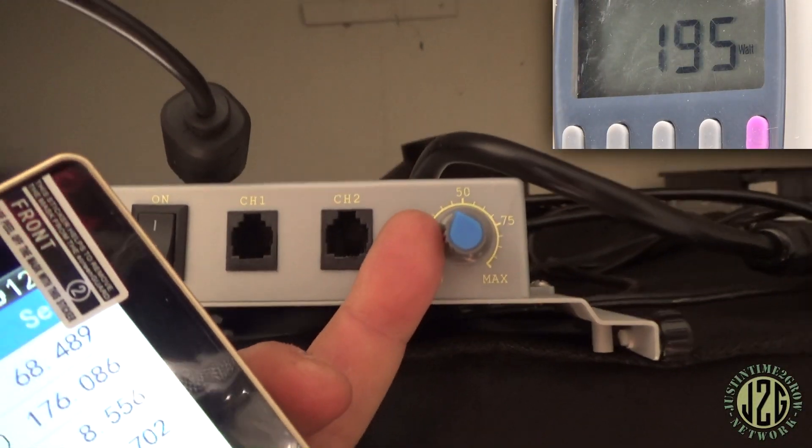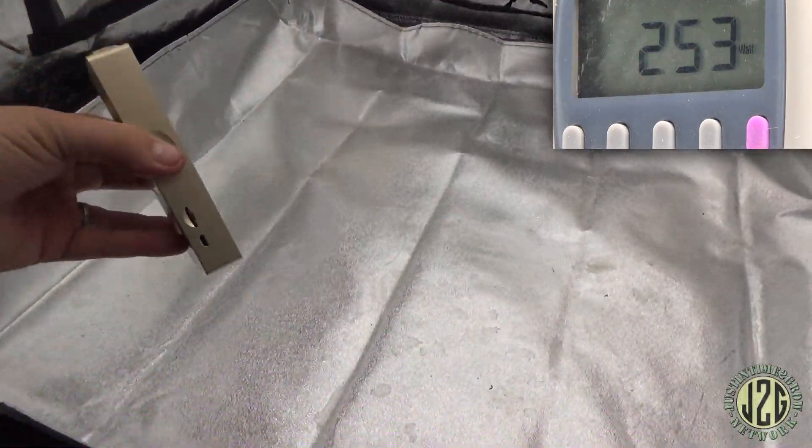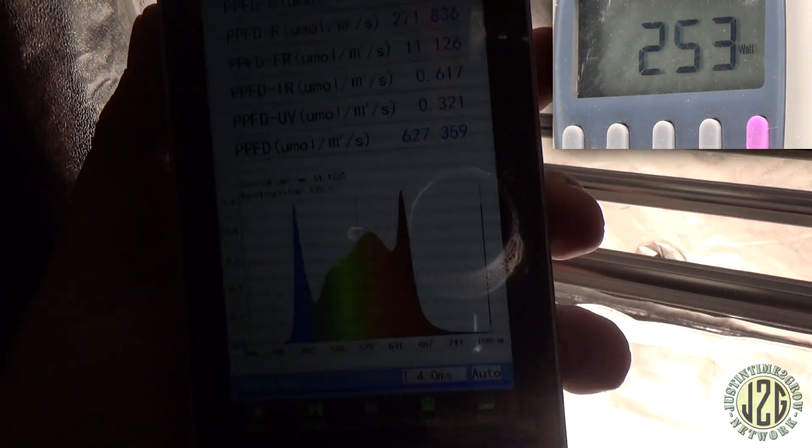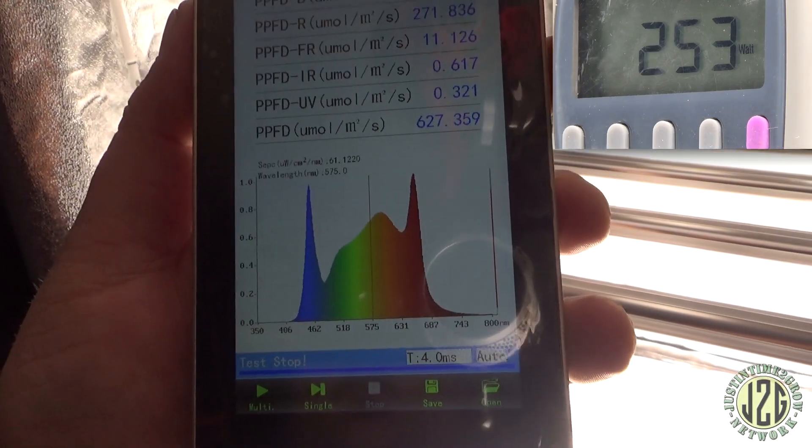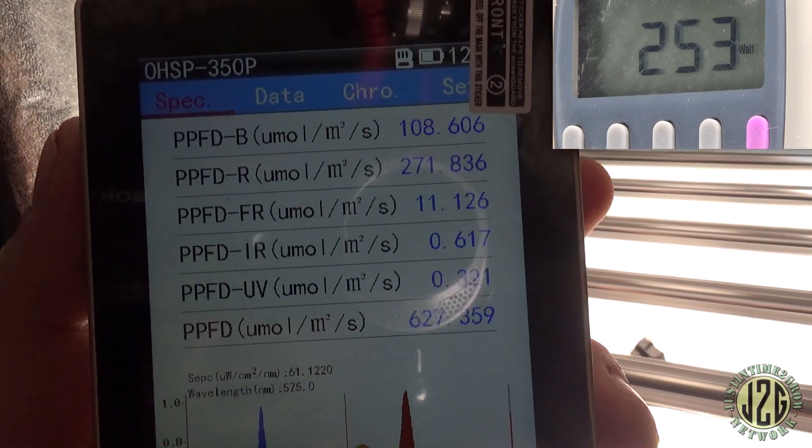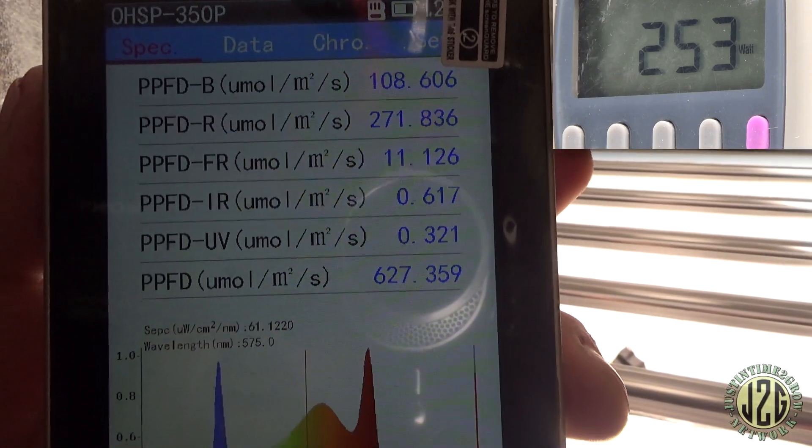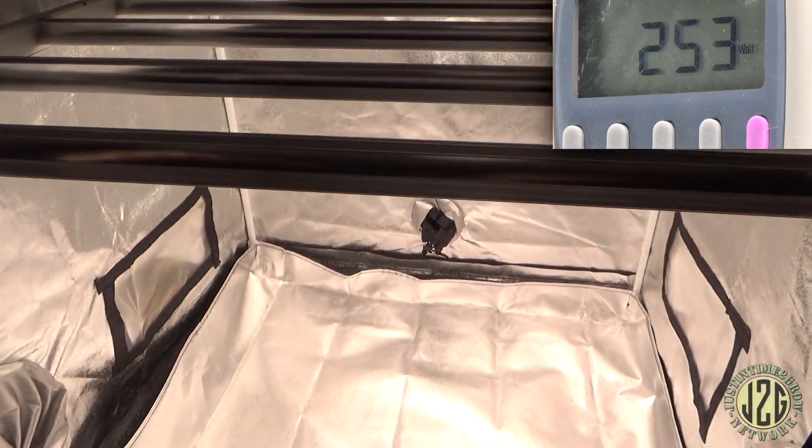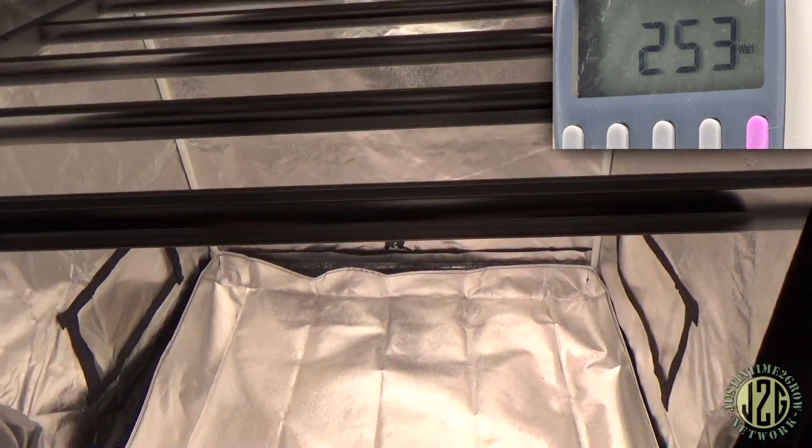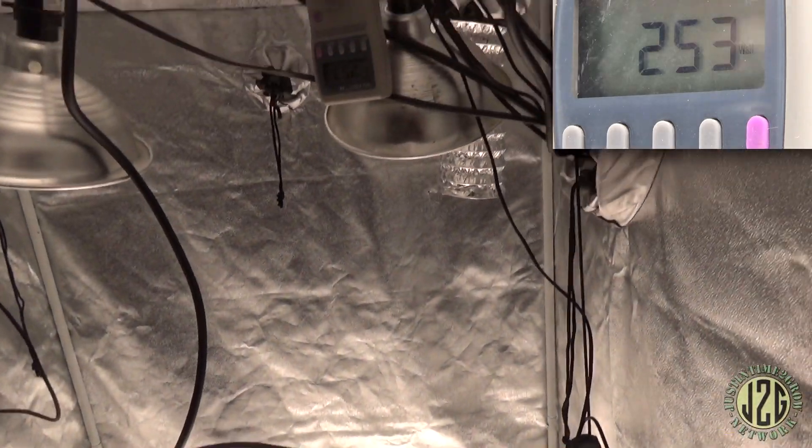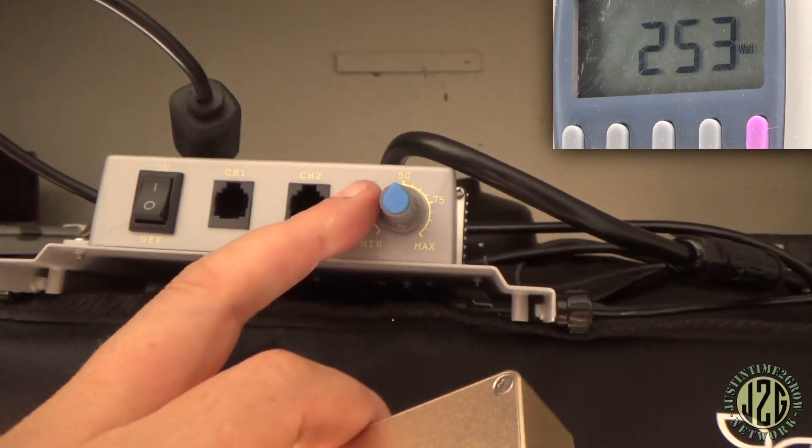Now let's see what, just take a quick reading at 50 percent in the middle here. 627, wow! We're already into flower territory. And take a look at the red, look at how much red this thing has. That is a crap ton of red. So really good for flowering, but it has enough blue for veg as well. It's a really good spectrum makeup, I dig it. But let's see how far we can push this thing, because we're already into flower territory at 50 percent. Let's just go to 75.